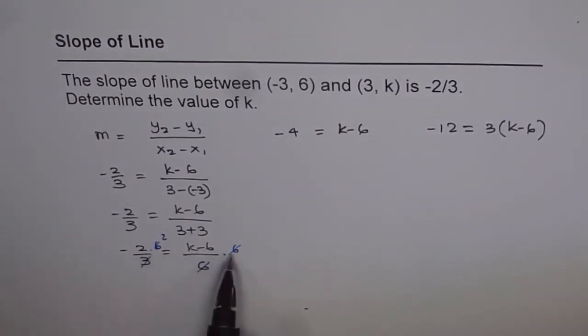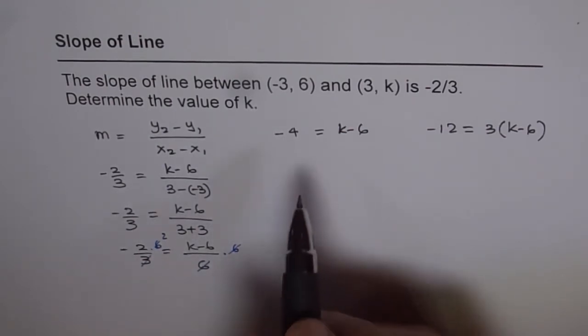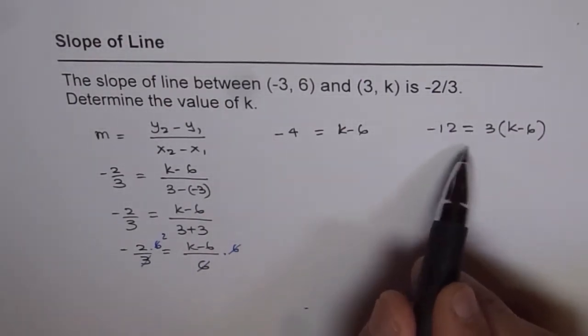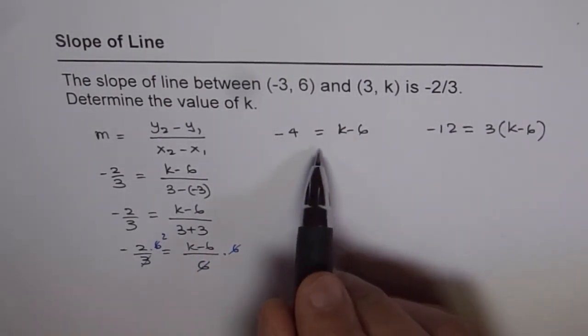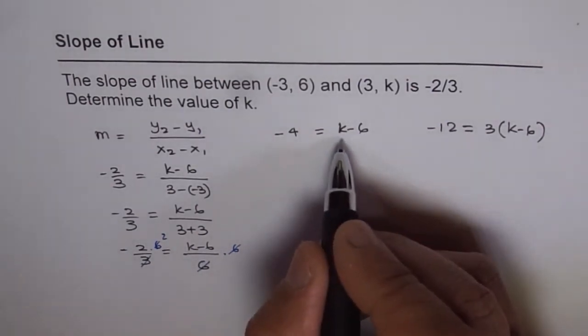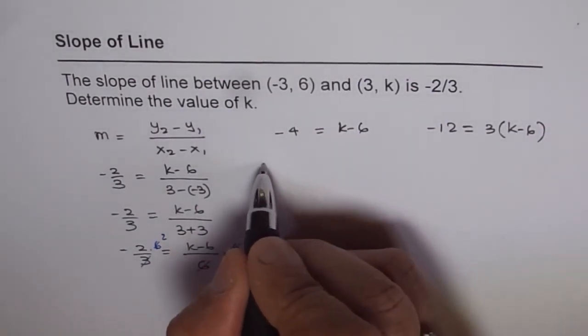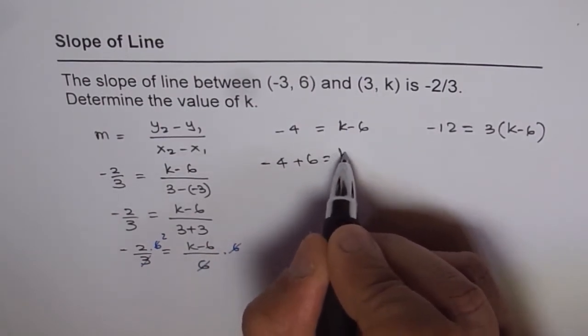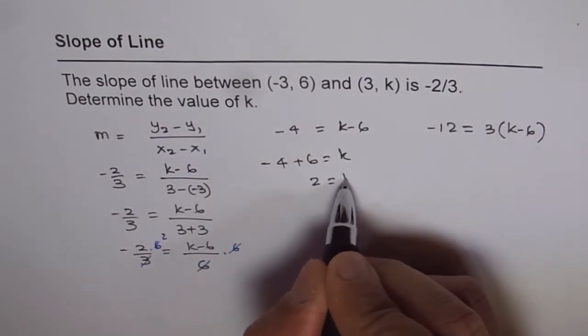But if you cancel them out by multiplying both sides by 6, which is the common denominator, then you get an equation which is much simpler to solve. So you can solve either way. So I prefer to do it this way. Now from here, I can find what k is by taking 6 on this side and so we get k equals 2.